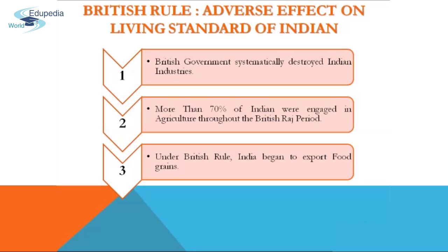More than 70 percent of Indians were engaged in agriculture throughout the British raj period. British policies raised rural taxes, which enabled merchants and moneylenders to become large landowners. Under British rule, India began to export food grains, which was responsible for frequent famines — as many as 26 million people died in famines between 1875 and 1900. The main goals of the British raj were to provide a market for British exports, service India's debt payments to Britain, and provide manpower for British imperial armies.